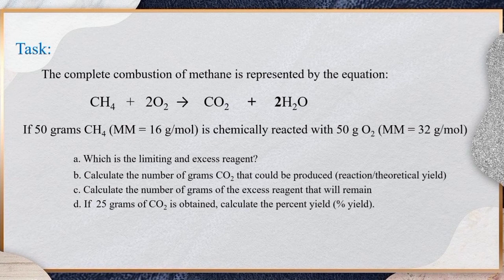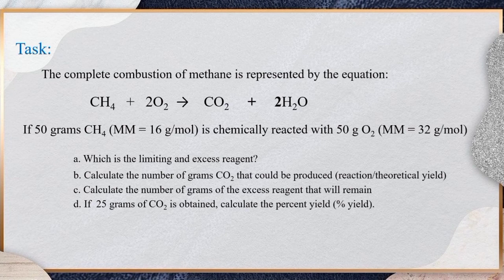It's time to do your task. The complete combustion of methane is represented by the equation: 1 mol CH₄ + 2 mol O₂ → 1 mol CO₂ + 2 mol H₂O. If 50 g of CH₄ with a molar mass of 16 g/mol is chemically reacted with 50 g of O₂ with a molar mass of 32 g/mol: a) which is the limiting and excess reagent? b) Calculate the number of grams of CO₂ that could be produced. c) Calculate the number of grams of the excess reagent that will remain. And letter D, if 25 g of CO₂ is obtained, calculate the percent yield. Good luck!